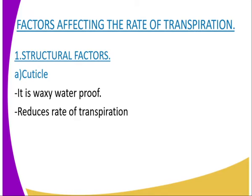The first structural factor which affects the rate of transpiration is the cuticle. Plants growing in arid or semi-arid habitats have their leaves covered with a thick layer of cuticle. The cuticle is a waxy waterproof material that reduces the rate of transpiration. This may be seen in plants such as the sisal, the cactus, and aloe vera.